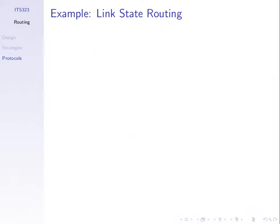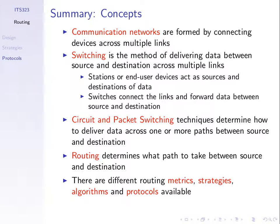If we update too often, it may cause oscillation or instability in switching between paths. If we update too slowly, we may choose a sub-optimal path. To summarize: routing strategies include flooding, adaptive routing, and fixed routing. Metrics include financial cost, delay, throughput, and number of hops. Algorithms include Bellman-Ford and Dijkstra, and many different protocols implement those algorithms and strategies.